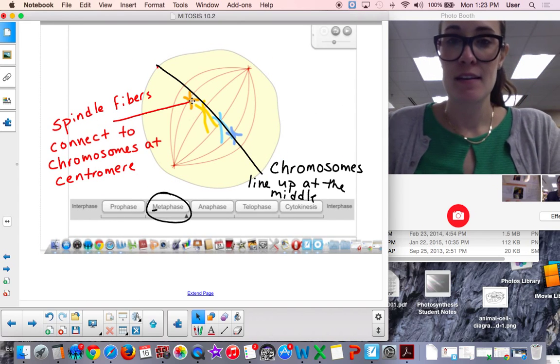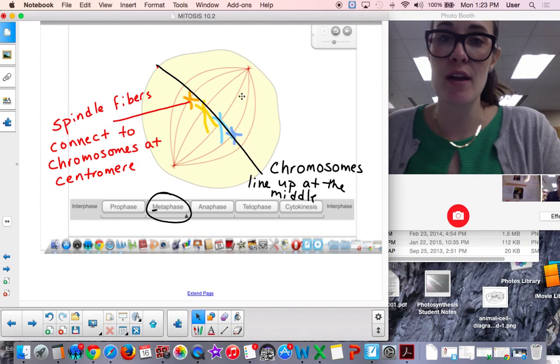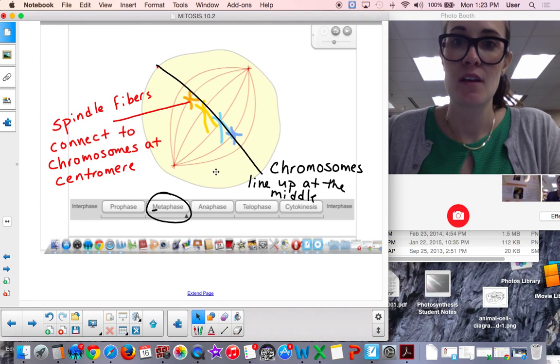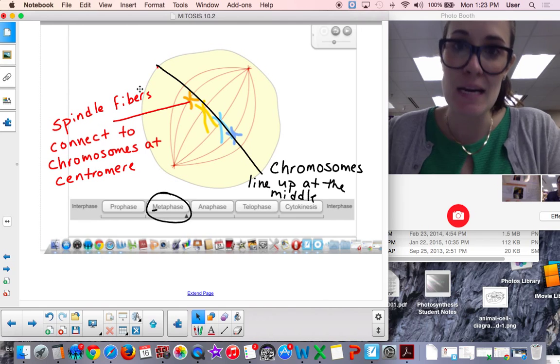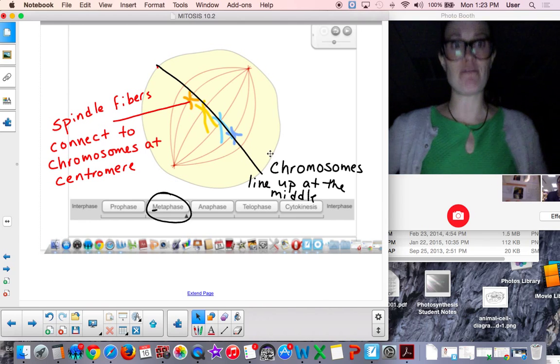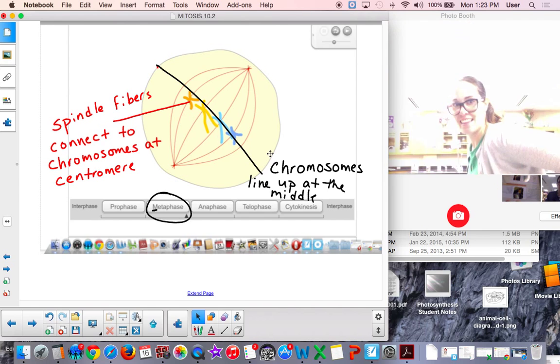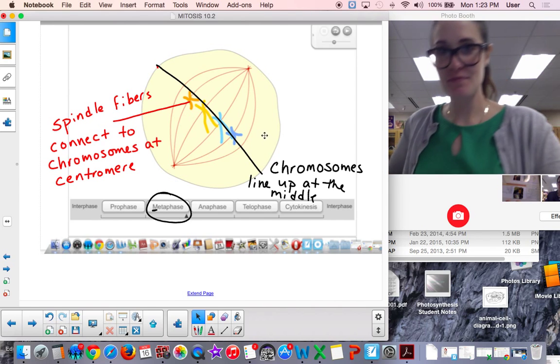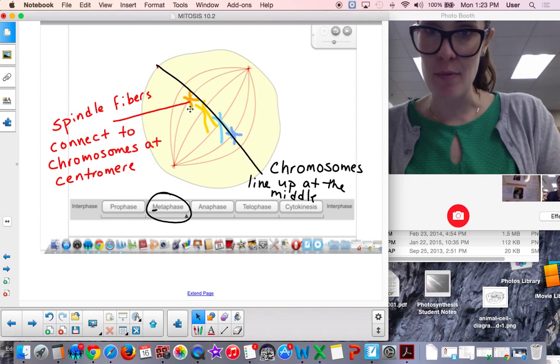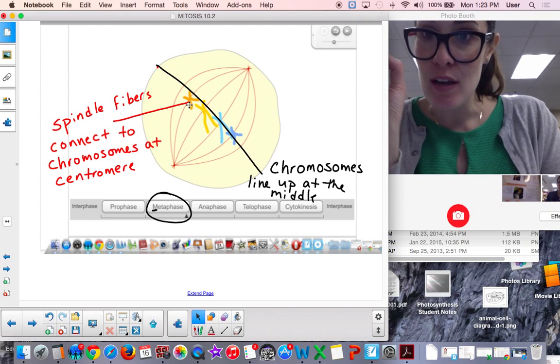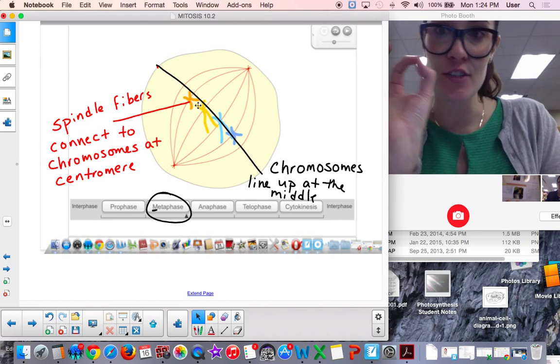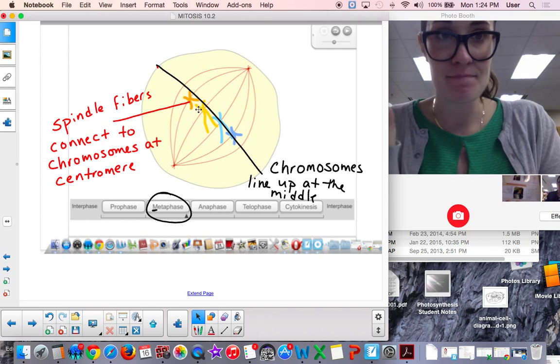Metaphase. We see still the cell membrane. Nuclear membrane is still gone. We're going to see the chromosomes line up at the middle. Write that down. Metaphase. The chromosomes line up at the middle. And also note the spindle fibers attach to the centromere or the center of those chromosomes at this step. So, they're attached.